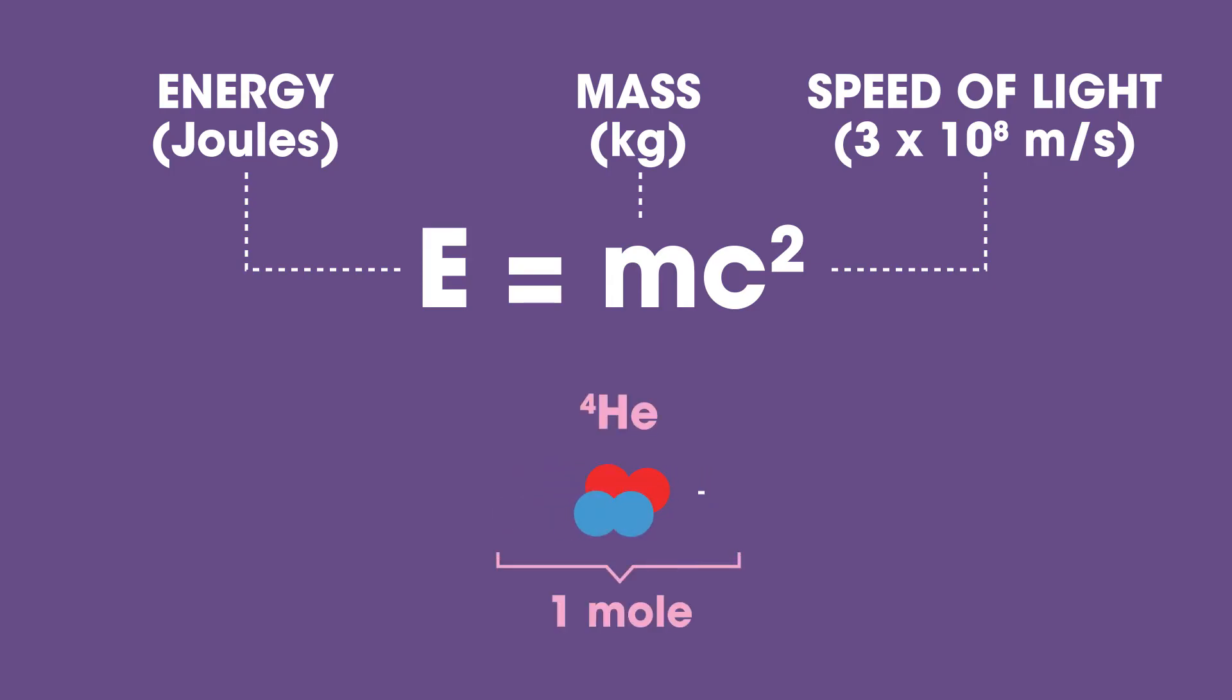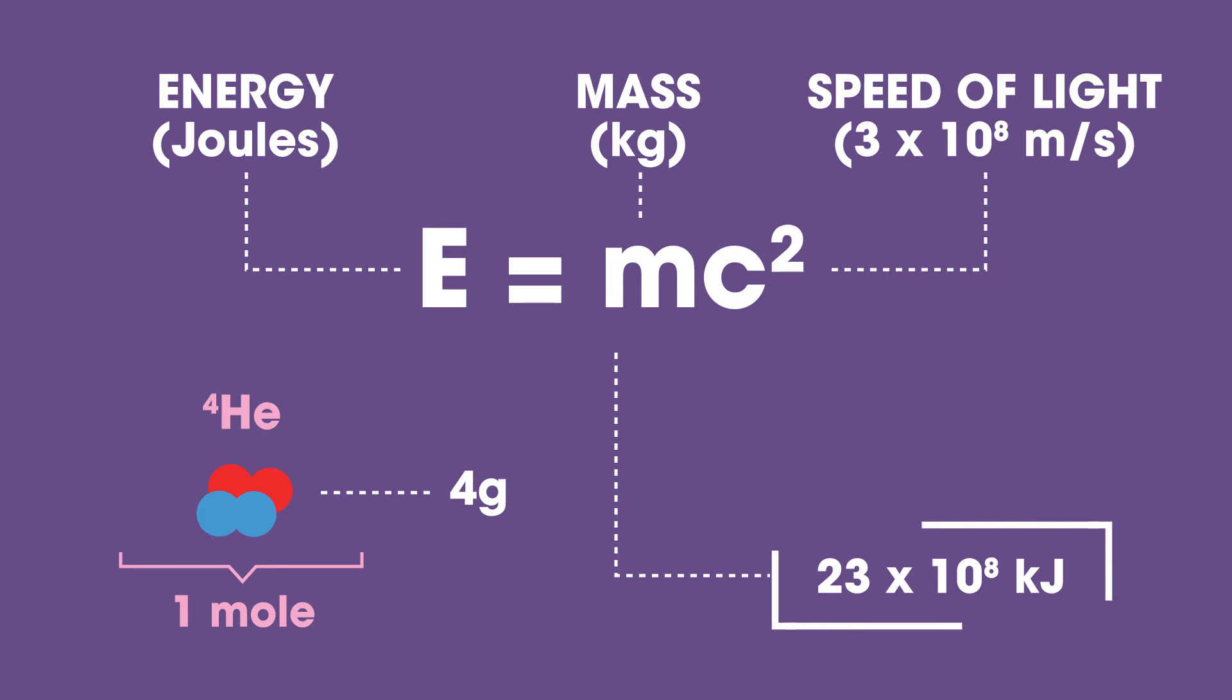If one mole of helium is made, which is 4 grams, then using E equals MC squared, the energy released is about 23 times 10 to the power of 8 kilojoules.